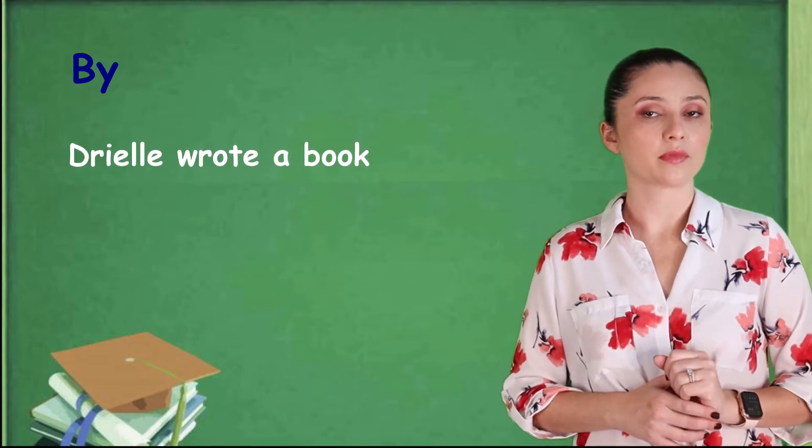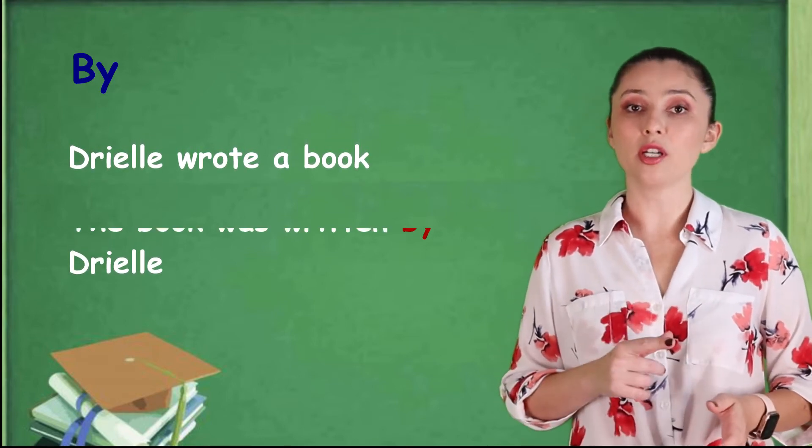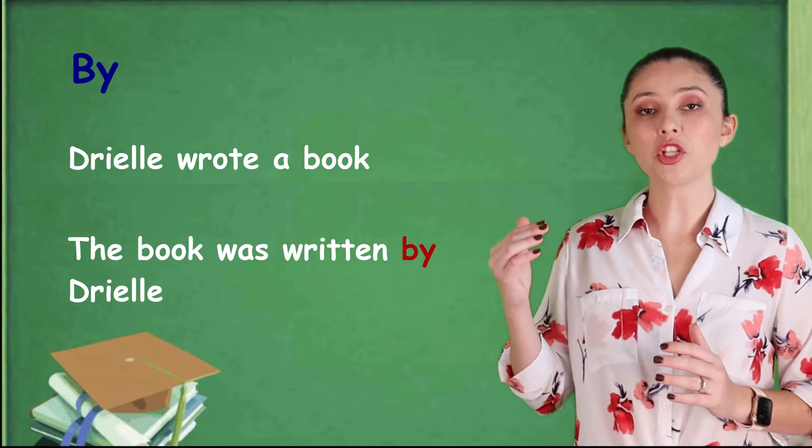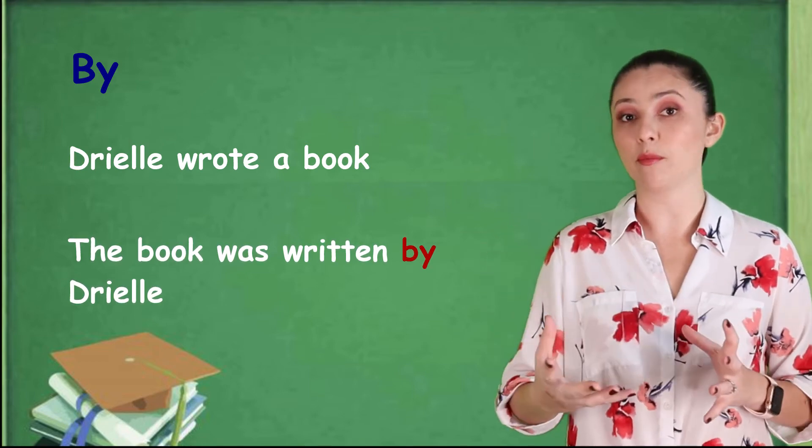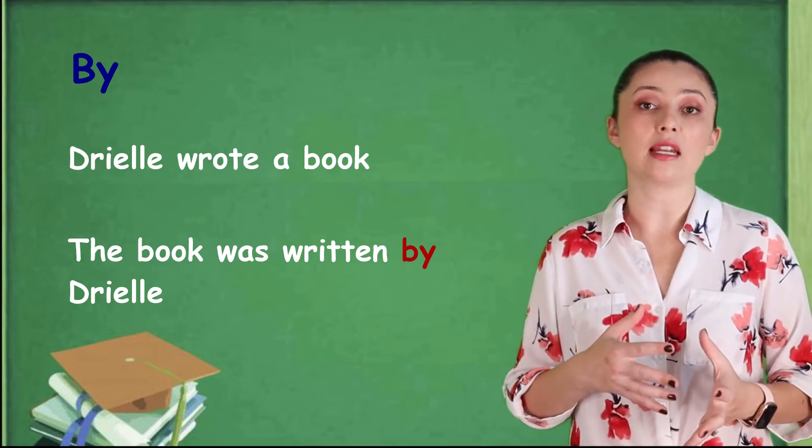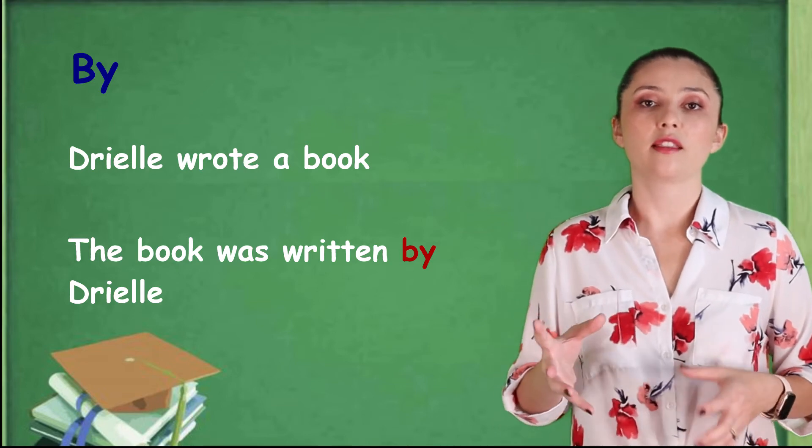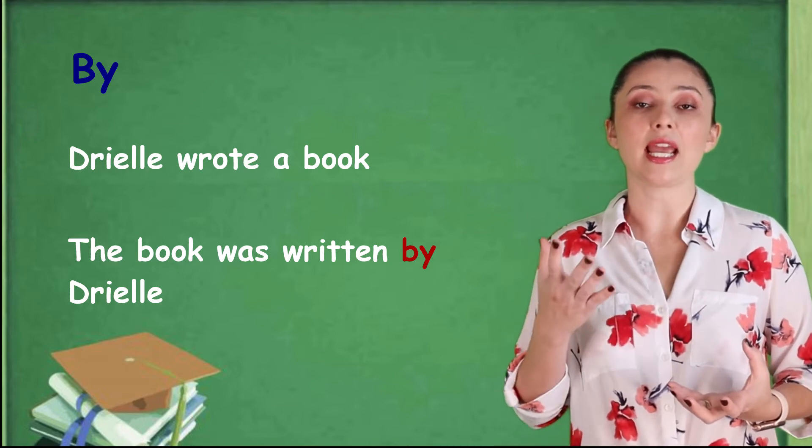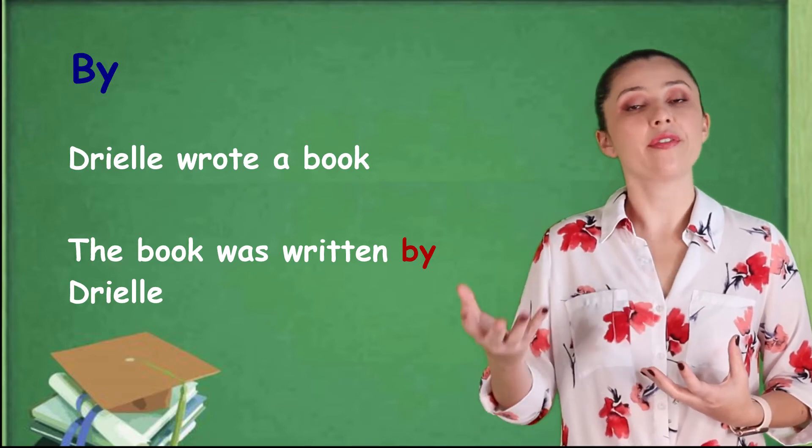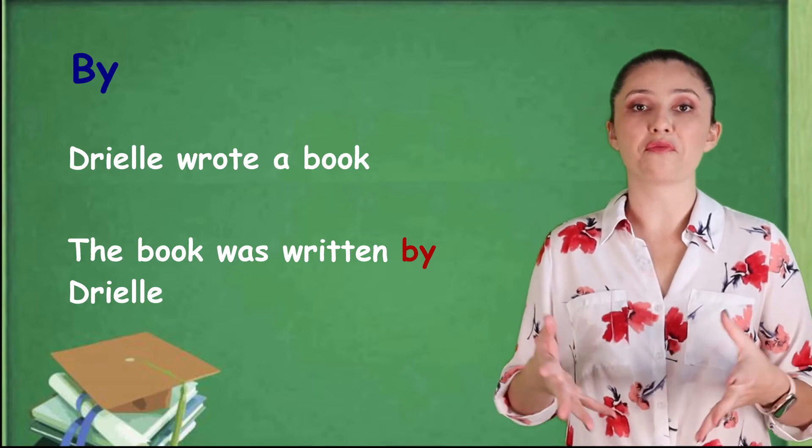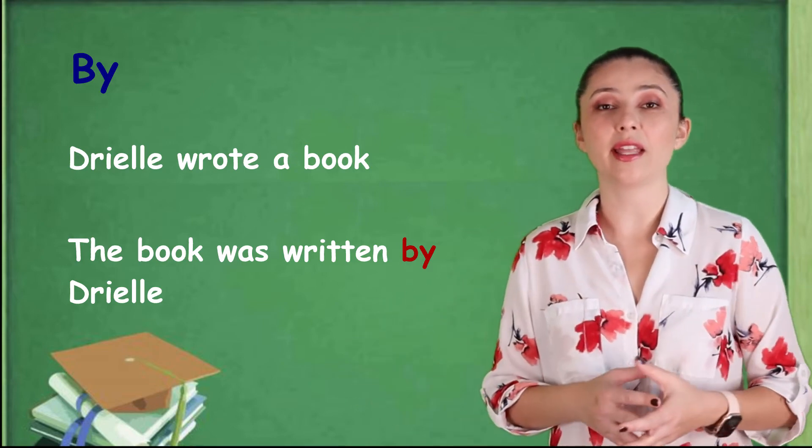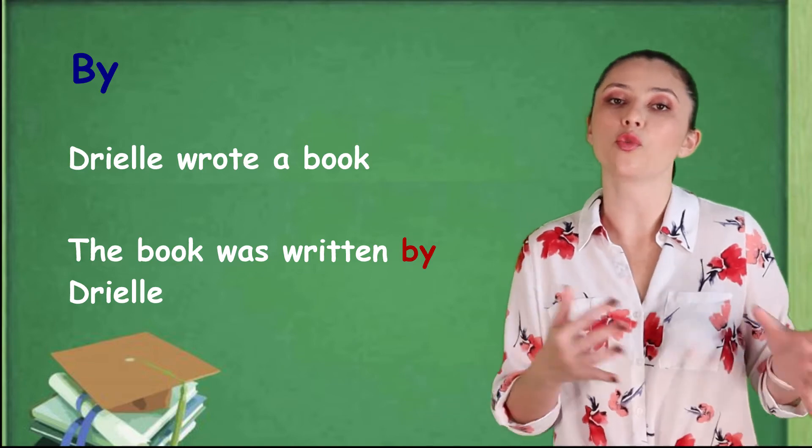English is taught by Drielli. I'm going to give you another example. Drielli wrote a book. Drielli wrote a book. The passive voice would be. The book was written by Drielli. The book originally was our object and now became our subject. Comes first. The book. And then we need an auxiliary verb in this case because the main verb is in the past. I need a past auxiliary verb. So, was. The book was. And then we need a past participle form of my verb. So, write, wrote and written. So, the book was written and then we need a preposition by and the person who wrote that book.